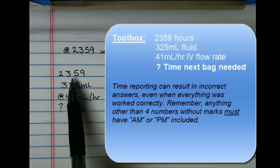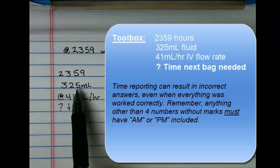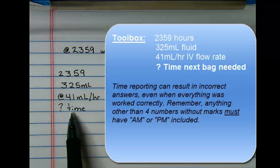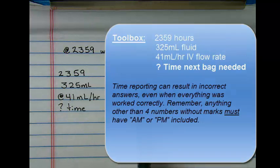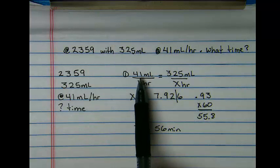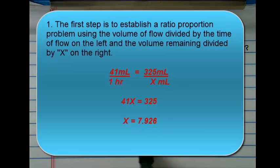The toolbox contains the time this was verified, the volume in the bag, the flow rate, and the question. To begin, we put together the flow rate of 41 milliliters in one hour to say, at this rate how long will it take for 325 milliliters to go in?